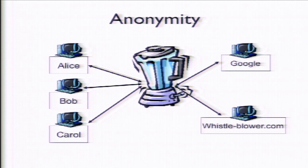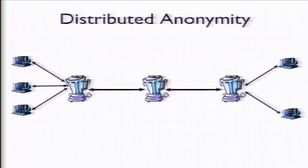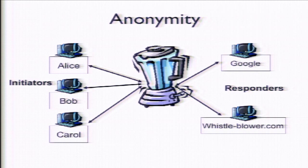Those relationships are being hidden by this blender in the middle, which in some systems we can call a mix. The idea of the mix is to hide, so everybody sends their traffic to the mix, the mix sends the traffic back out, the responses come back through the mix. So anybody who's watching Alice does not know who Alice is talking to. Anybody who's watching whistleblower.com does not know who is blowing the whistle. We'll call the people over on the right the initiators, so the users of the system who want the anonymity. The websites over on the left we'll call the responders.